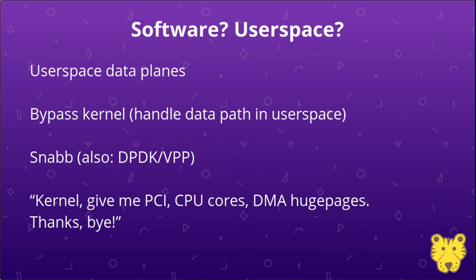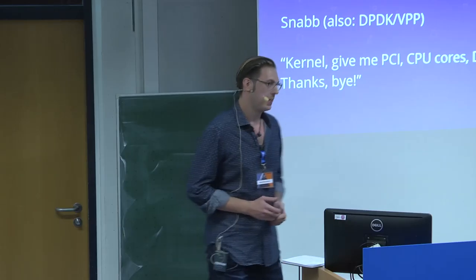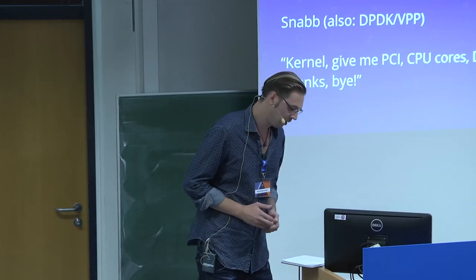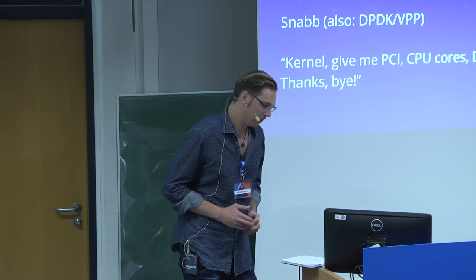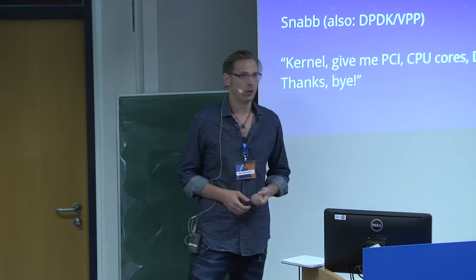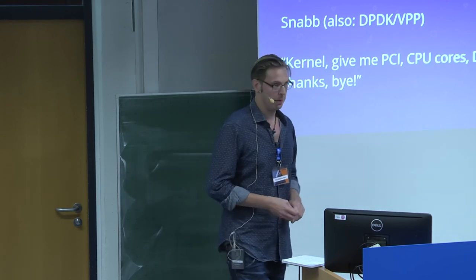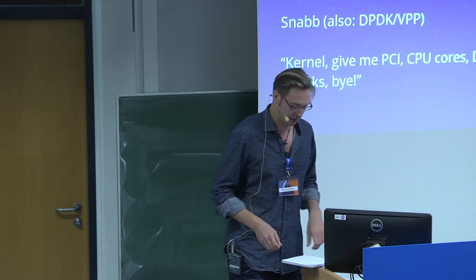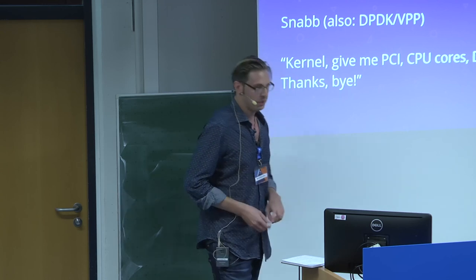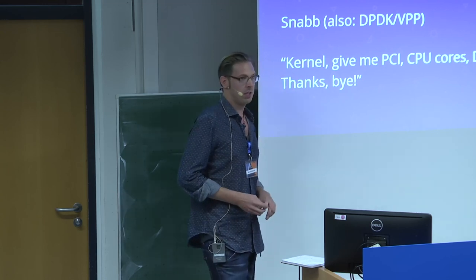One approach to work around that is to bypass the kernel on the data path completely and stay in user space the whole time instead. We ask the kernel to provide us with some resources — namely PCI devices, some CPU cores, and some huge pages (special memory) — and we take it from there ourselves. This technique doesn't only apply to networking; if you're in the business of writing really fast software in general, this talk might be interesting to you.